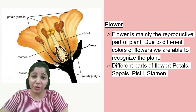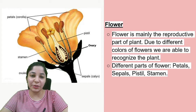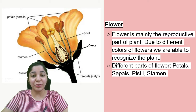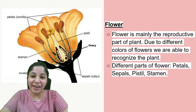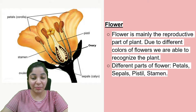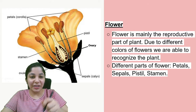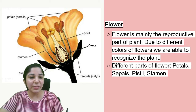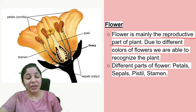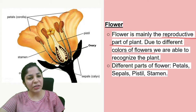Welcome to yet another video of Getting to Know Plants. This is part three of the chapter where we'll be covering flowers. Flowers look very beautiful, have wonderful fragrances, and come in different colors, shapes, and sizes. We'll discuss the different parts of the flower and how they are responsible for reproduction. The flower is mainly the reproductive part of the plant, which also gets converted into fruit. Due to the different colors of flowers, we are able to recognize the plant.